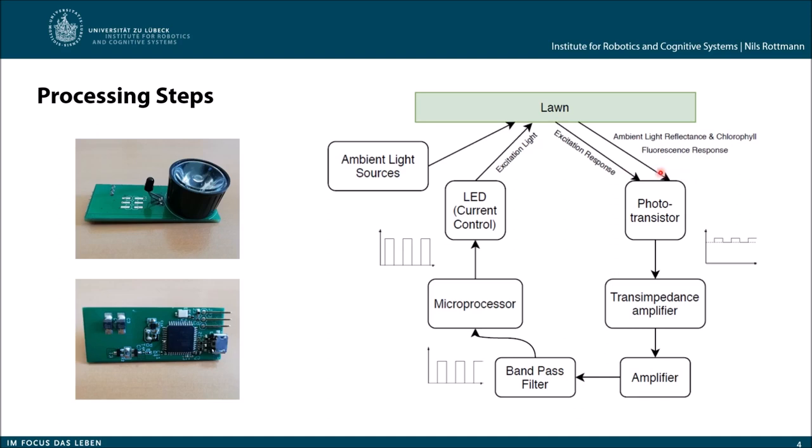What we measure with the phototransistor is a signal with a high DC part and really low AC part. This AC part comes from the excitation response from our LED.